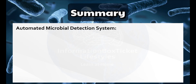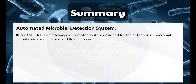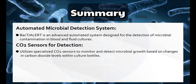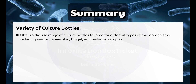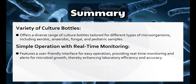Summary. Automated Microbial Detection System: BactiAlert is an advanced automated system designed for the detection of microbial contamination in blood and fluid cultures. CO2 Sensors for Detection: Utilizes specialized CO2 sensors to monitor and detect microbial growth based on changes in carbon dioxide levels within culture bottles. Reduces Time to Diagnosis: Significantly shortens the time required to diagnose life-threatening infections such as sepsis, enabling quicker clinical intervention. Variety of Culture Bottles: Offers a diverse range of culture bottles for aerobic, anaerobic, fungal, and pediatric samples. Simple Operation with Real-Time Monitoring: Features a user-friendly interface providing real-time monitoring and alerts, enhancing laboratory efficiency and accuracy.